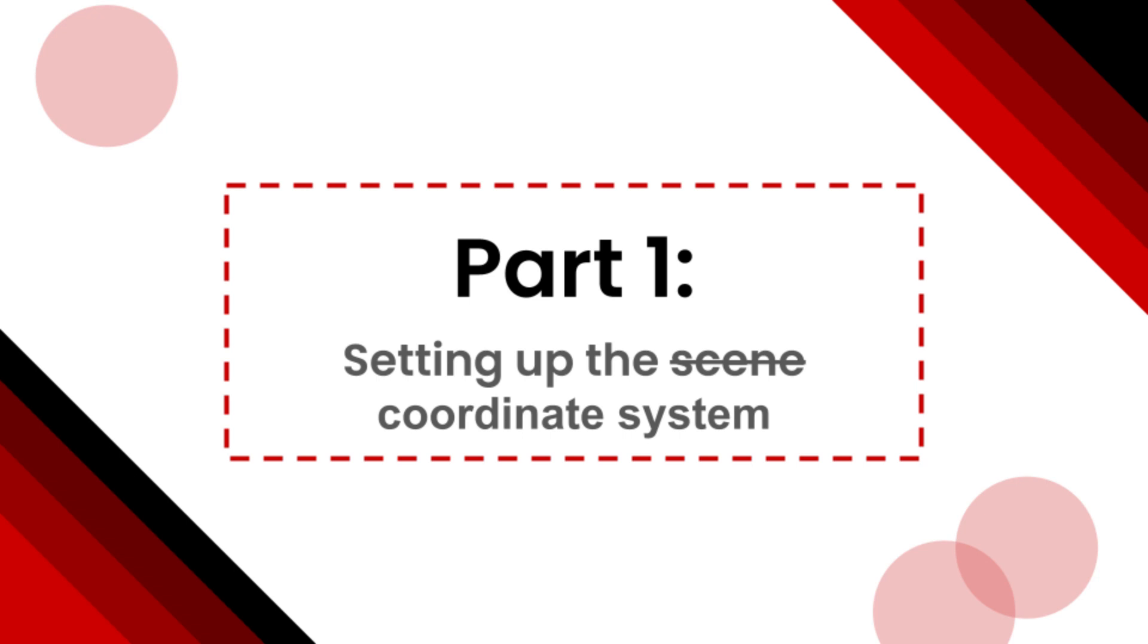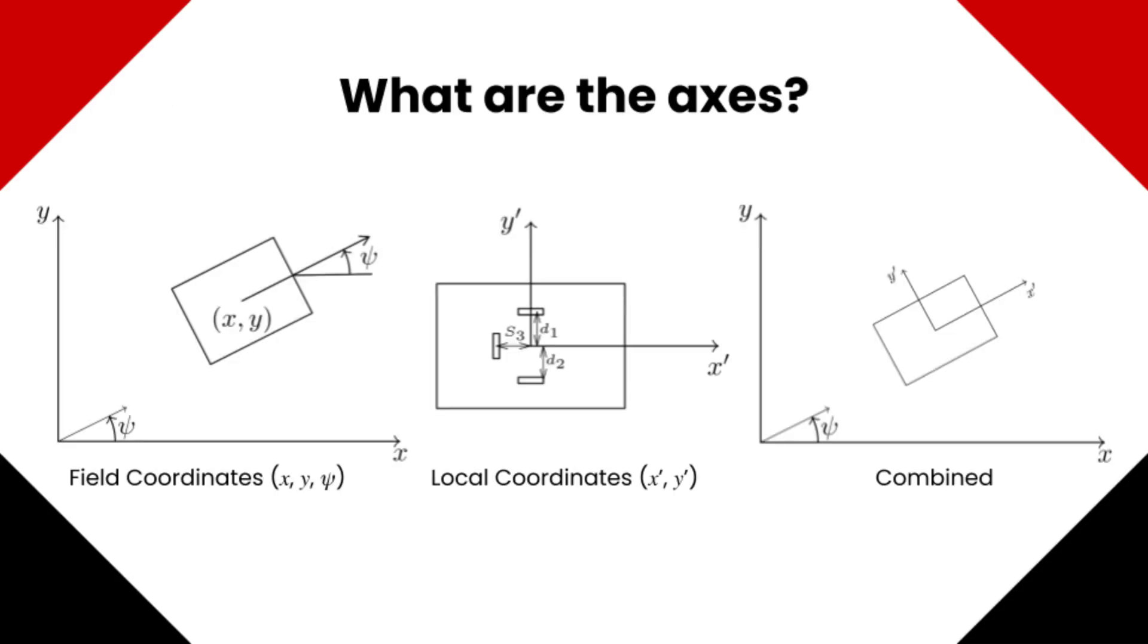In order to determine robot velocity using the data from the encoder wheels, we need to do some geometry. The first step is to define the coordinate system, what we're trying to find in the first place. The most logical way to define robot position is through three numbers: x position, y position, and orientation angle psi.